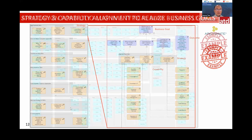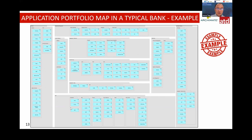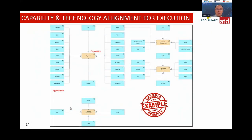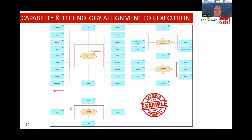This is a snapshot of an application portfolio in a typical bank — intentionally small so you can't fully read it, but it's just one portfolio of core banking. When we zoom in, every core banking component supports a particular capability. After defining the meta model, we know exactly where the dependencies are — if I change a particular application, I know exactly which capability is impacted and how that capability impacts key stakeholders and the business.